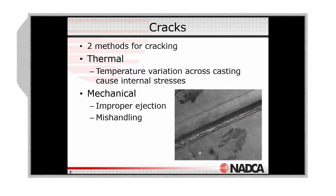The other way you can get a crack is mechanically. If there is improper ejection — for example, if you have ejector pins that are too short, or ejector pins that are stuck and not pushing out, or if the casting is stuck in one section and only one half is getting pushed out — it's going to end up bending the casting and could cause cracking.